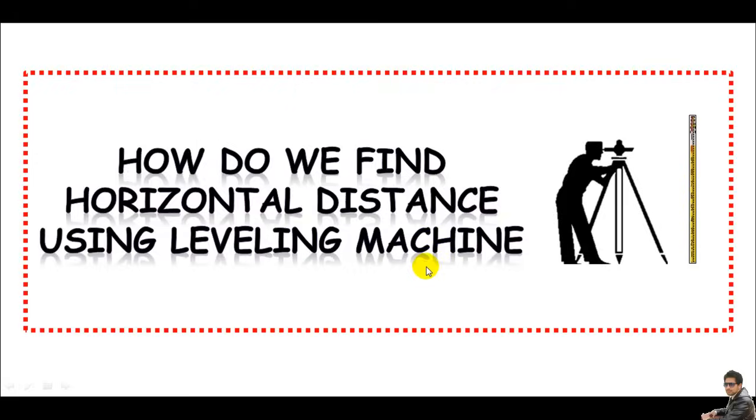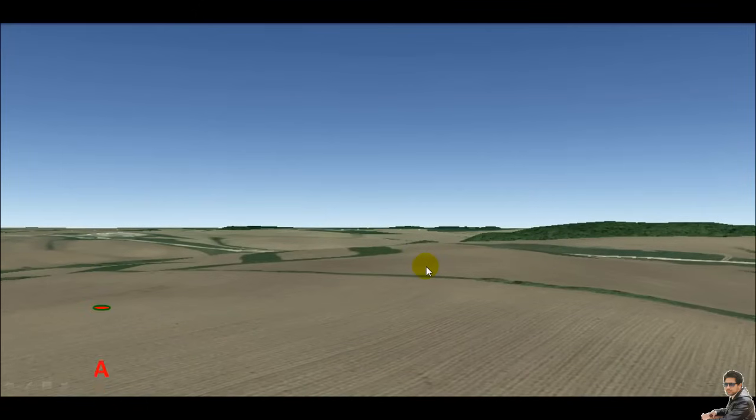If there are two points on Earth's surface, like point A and point B, and we need the distance between these two points. Here, the distance means the horizontal distance between these two points.